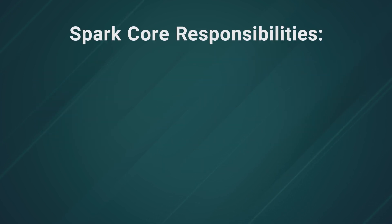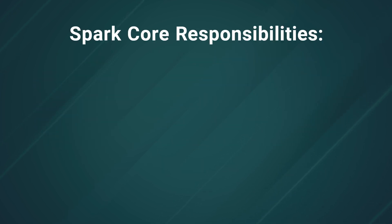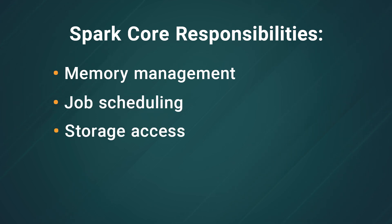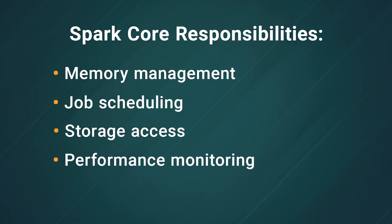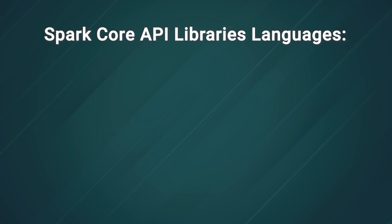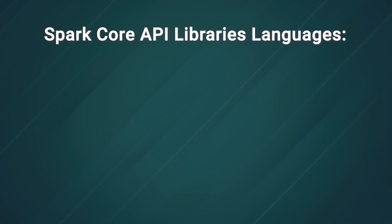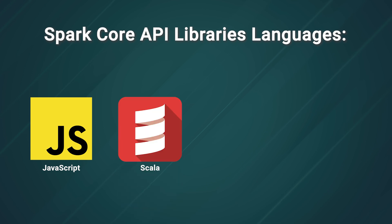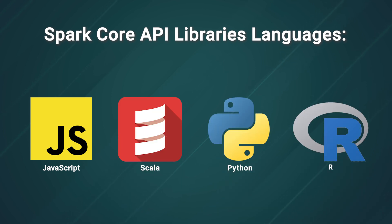Spark Core's responsibilities include memory management, job scheduling, storage access, performance monitoring, and IO operations. Spark Core has several API libraries for various languages, including Java, Scala, Python, and R. Third-party language libraries exist as well.